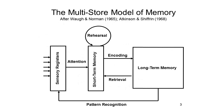We talk about memory as if it's one thing, but a little reflection shows that there are lots of different kinds of memory. One distinction among memories is temporal — how long the memory lasts. This distinction is based on the intuition that remembering an unfamiliar telephone number that you've just looked up is somehow different from remembering your own telephone number or the telephone number of your boyfriend or girlfriend. This intuition is captured in a classic view of memory known as the multi-store model of memory, proposed by a number of investigators in the 1960s. The multi-store model distinguishes among three different types of memory — three different storage structures that hold information either temporarily or permanently.